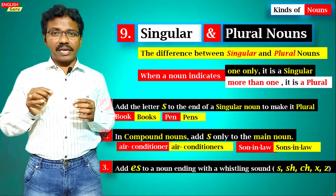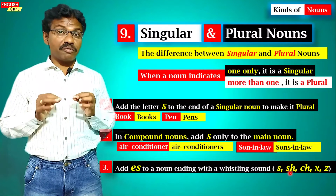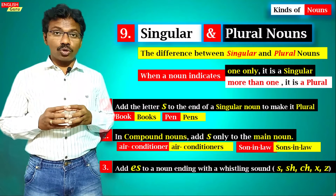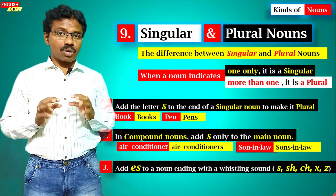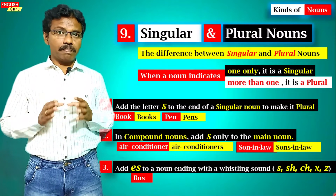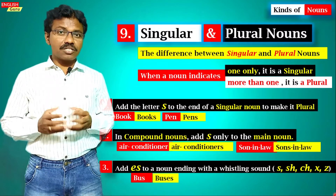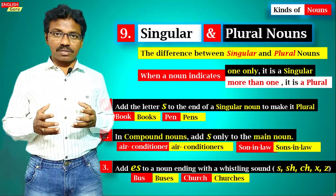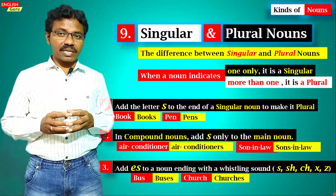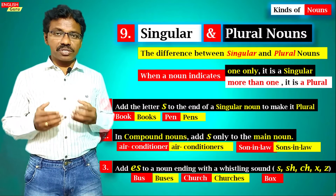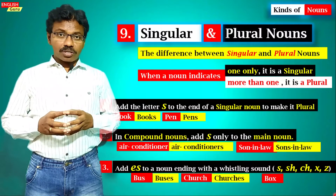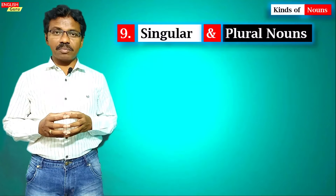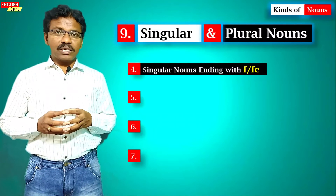Another rule: add 'es' to words ending with whistling sounds like s, ch, x, and similar endings. For example, 'bus' becomes 'buses,' 'church' becomes 'churches,' and 'box' becomes 'boxes.'